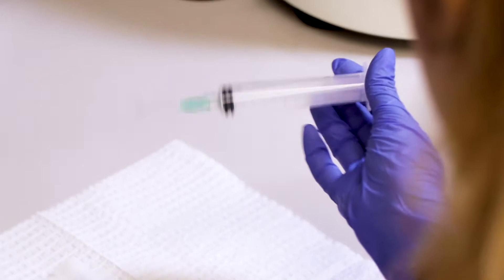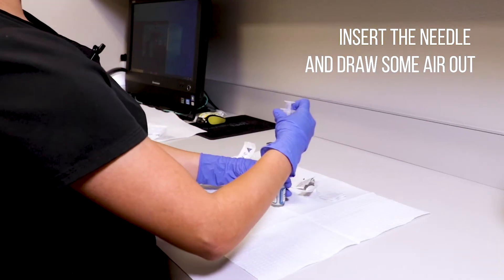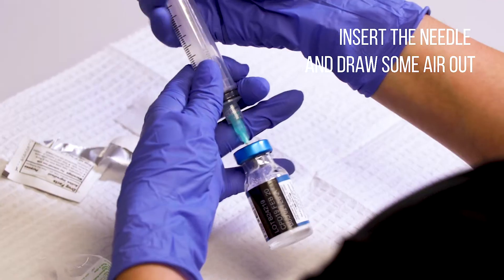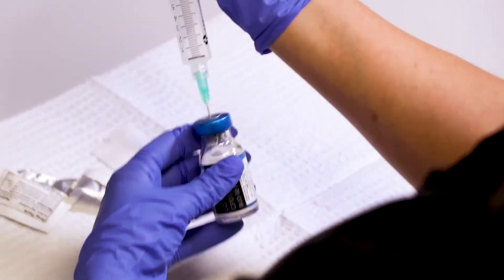To remove some pressure from the vial, you're going to insert the needle and simply draw some air out. It might give you some resistance but just hold the plunger and you can do this two or three times.